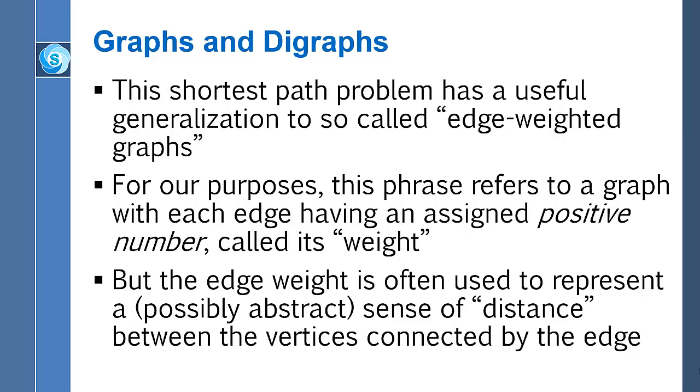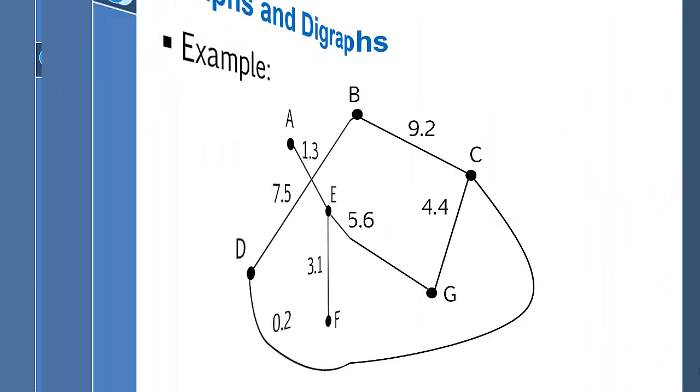And so in this context of edge-weighted graphs, it's really quite useful to revise our sense of the length of a path. In the ordinary graph situation, we say the length of a path is the number of edges involved. But in this situation with edge-weighted graphs, we're going to think instead that the length of a path is going to be the sum of the weights of the edges along that path.